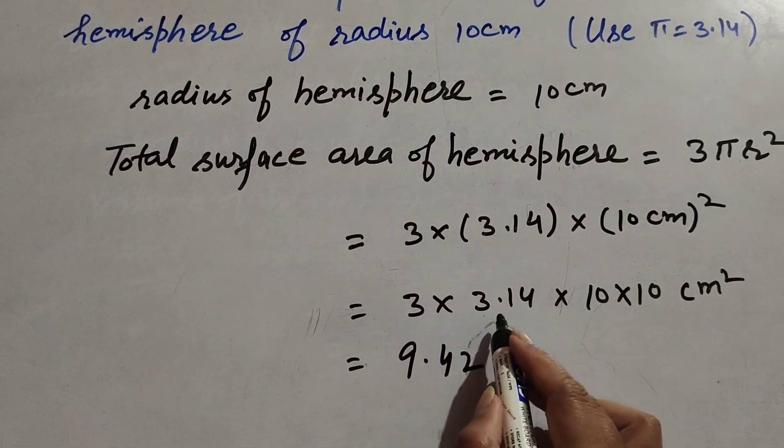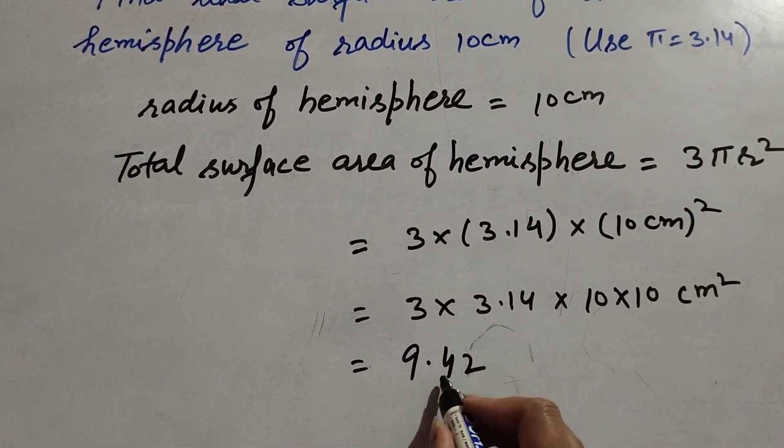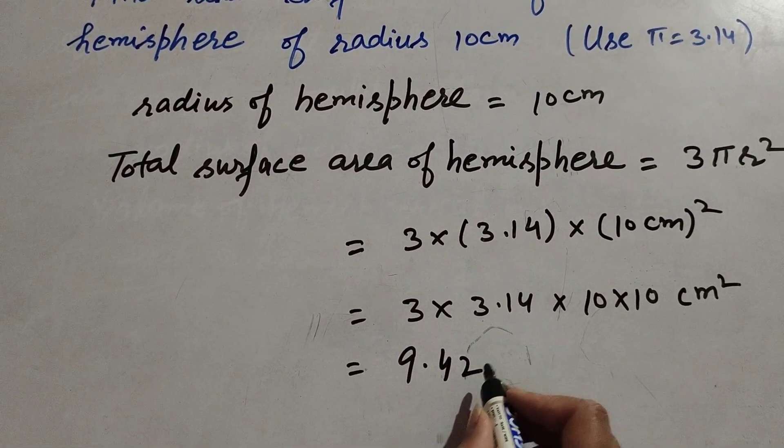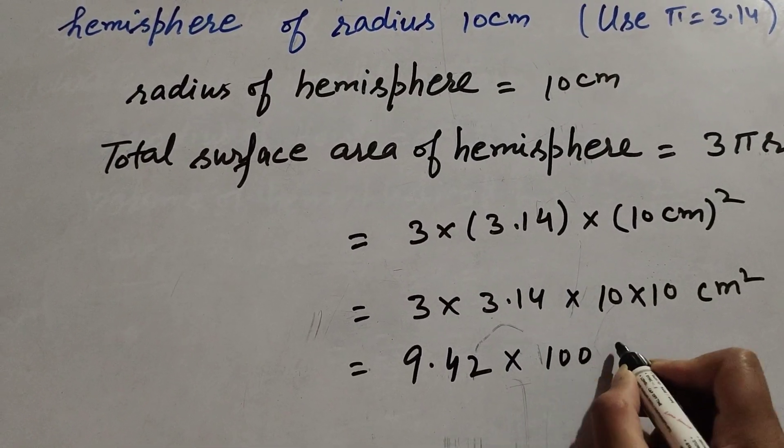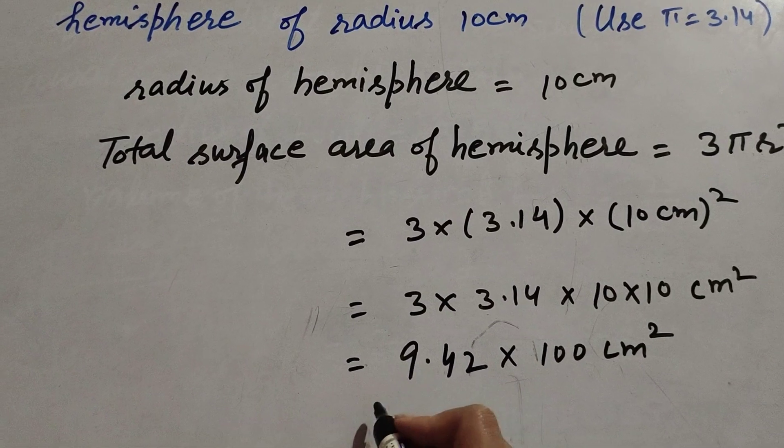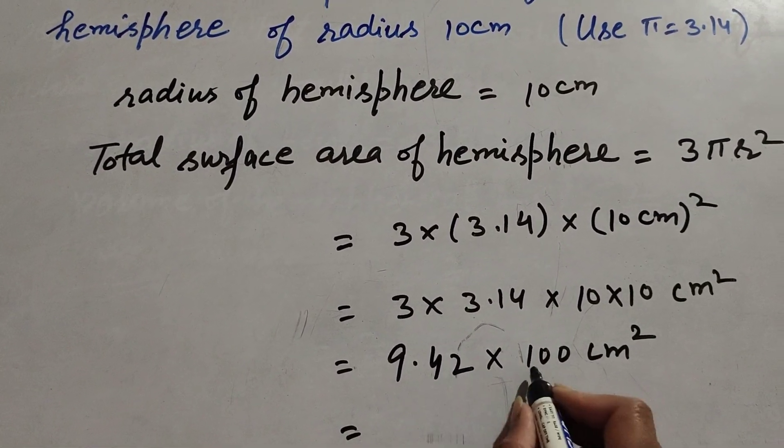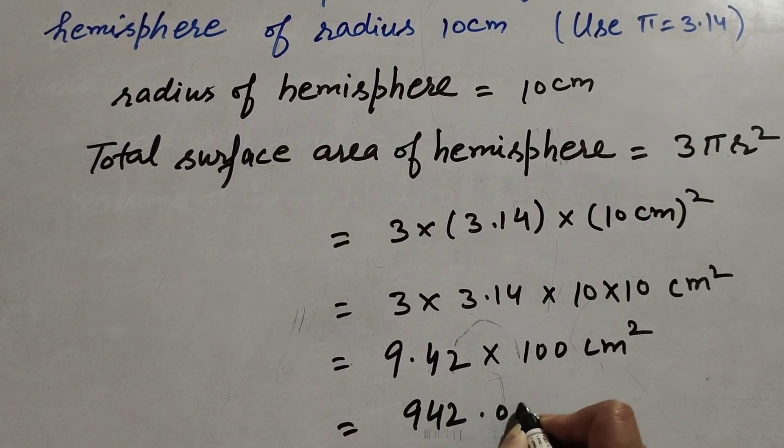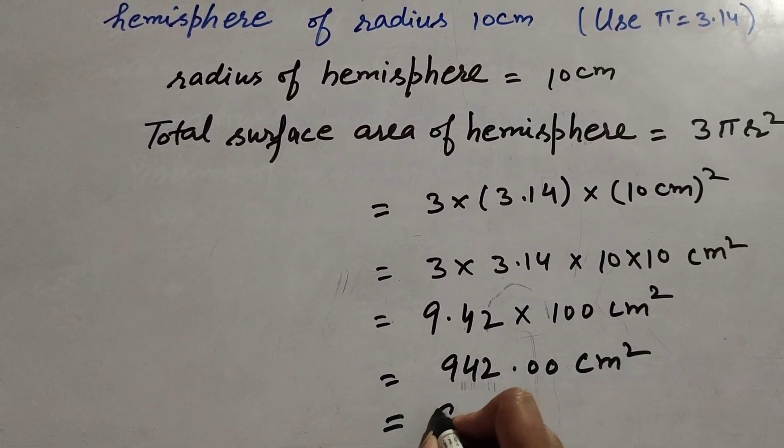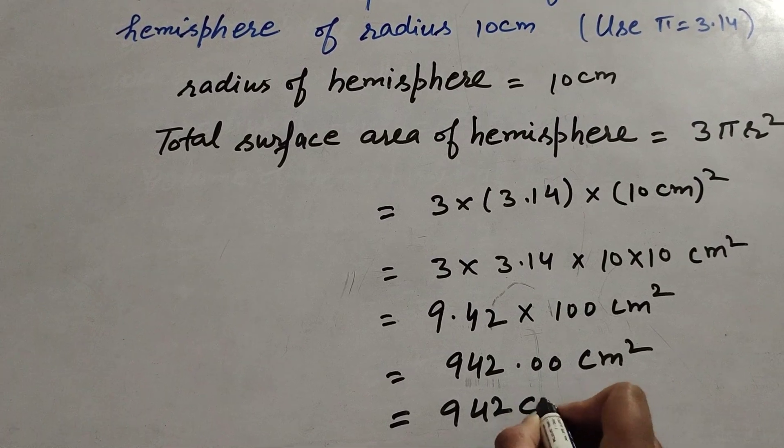We get 9.42 multiplied by 100 centimeter square. Now 9.42 × 100, we get answer 942 centimeter square.